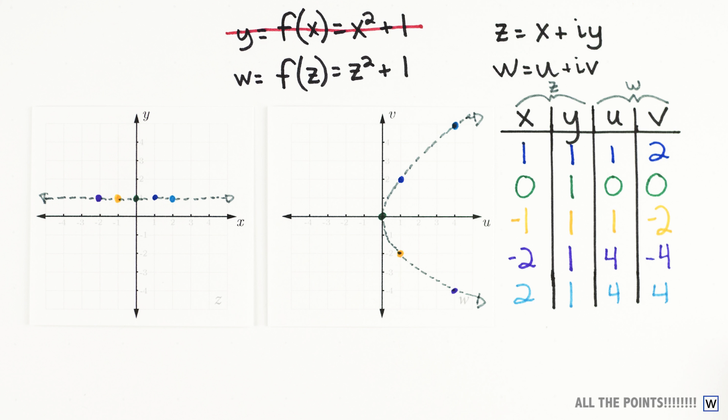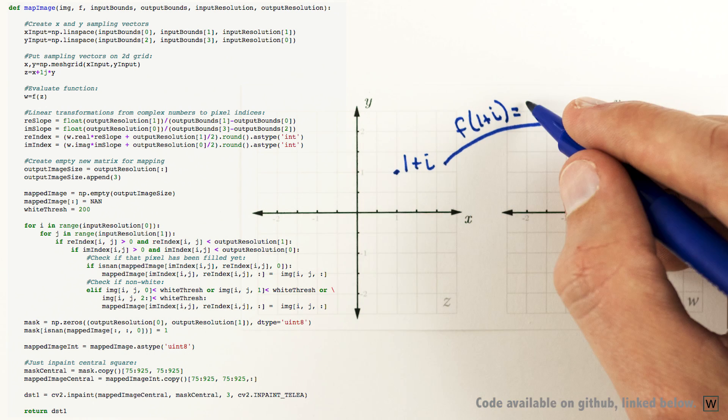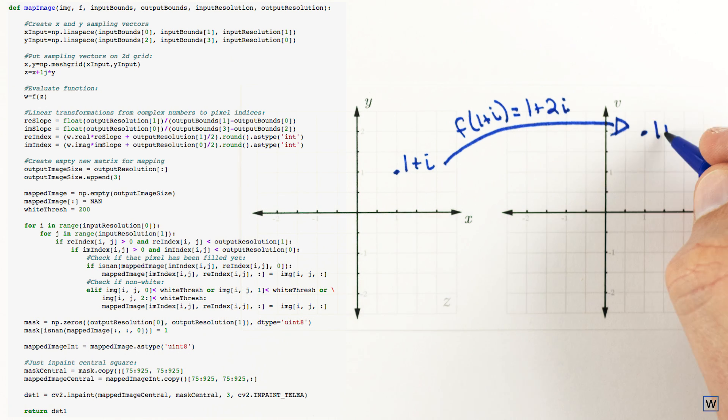We'll take advantage of the fact that the image you're seeing is just a collection of pixels that happen to be arranged on a grid. We'll use some code written in the programming language Python to move every single pixel in our input space to its proper location in the output space.